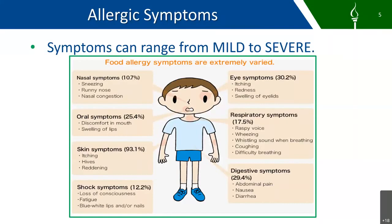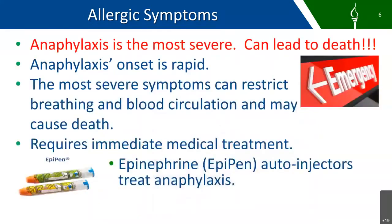On this slide, we're seeing the different food allergy symptoms. They could be sneezing, swelling of the lips, anaphylaxis, digestive issues, red itchy eyes, wheezing or coughing, difficulty breathing. They could even lose consciousness and have blue lips or nails. Anaphylactic shock is the most severe — anaphylaxis can lead to death. So it's always important to call 911 and administer epinephrine, the EpiPen. The anaphylaxis onset is usually rapid; the most severe symptoms can restrict breathing and blood circulation and may cause death.